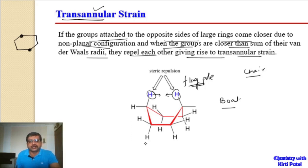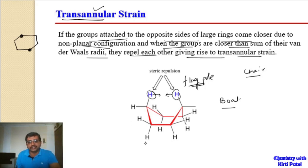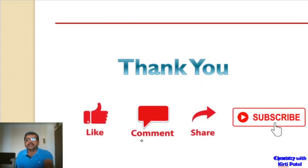To summarize, we have seen four different types of strains present in cycloalkanes: Baeyer's angle strain, van der Waals steric strain, Pitzer's torsional strain, and transannular strain. These are the four different types of strains present in cycloalkanes. Thank you.